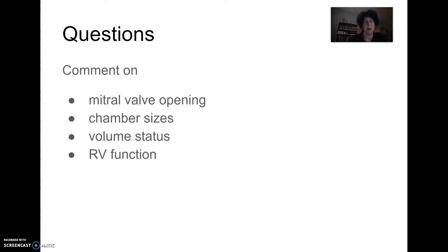Look at all of the chamber sizes and think about volume status, because you're going to take this patient to the OR and you want to know if they're underfilled, overfilled, or normal. Also think about RV function — when inducing a patient, RV function is important, and if you're doing an embolectomy and fasciotomies with reperfusion, that reperfusion shock on top of prior RV dysfunction means you should really be thinking about instituting RV support earlier in the case.